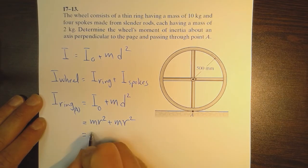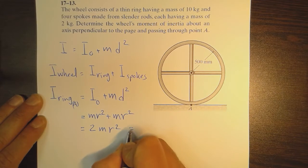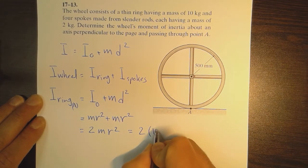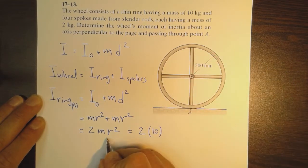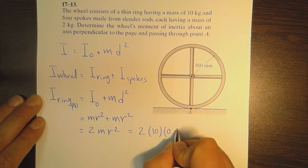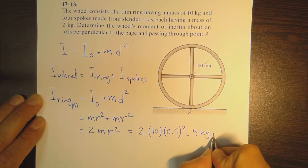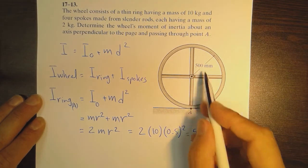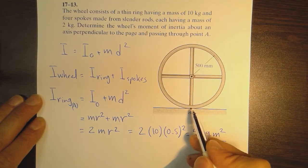So we will have 2mr². Substituting the values we already know: 2 times 10 (the mass of the ring) times 0.5² gives us 5 kg·m². This is the moment of inertia of the ring only around an axis passing through point A.